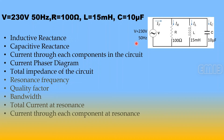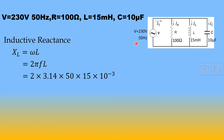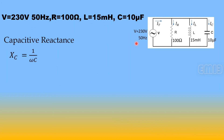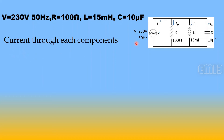First, finding inductive reactance: XL = ωL = 2πfL = 2 × 3.14 × 50 × 15 × 10⁻³, giving XL = 318.47 Ω.